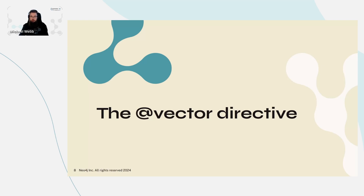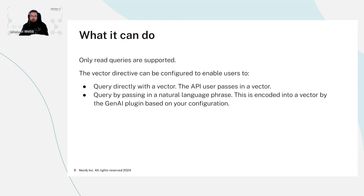The vector directive has been introduced to the GraphQL library. At the moment it's a read-only query — it supports only read, you can't mutate with this. But it can be configured in two different ways. First, you can pass a vector directly into the API, so the user would pass the vector themselves having done the embedding generation themselves. Or you can pass a query, and then the embedding is done by the API in essence, and then we query using that.